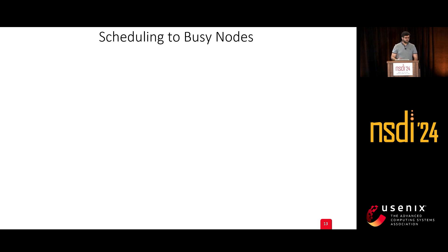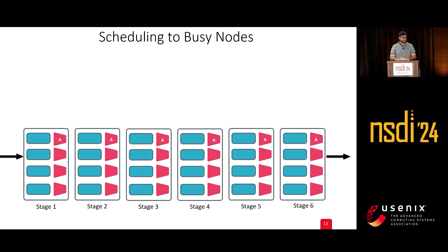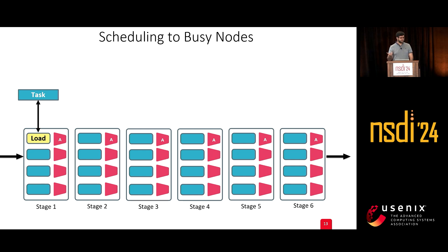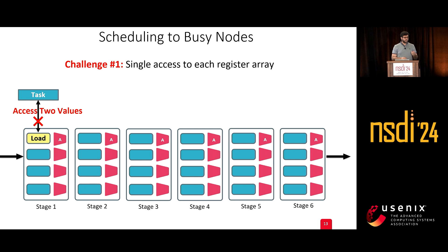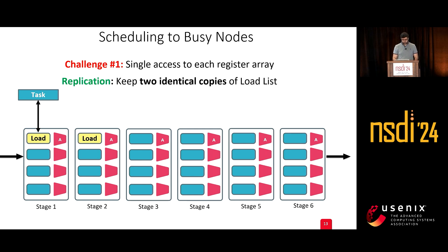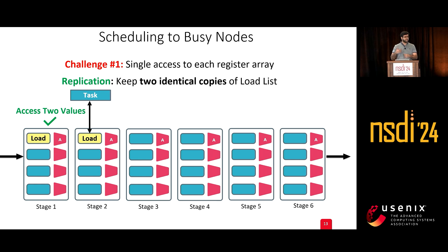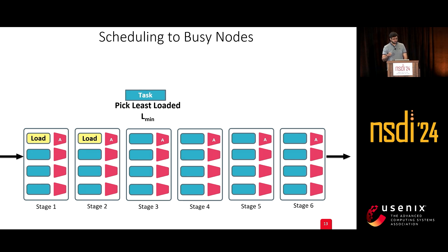In packet processing pipelines, packets concurrently exercise different stages. A task enters the pipeline as a packet and reads the load value from the load memory. The first challenge is that we can only have single access to each register array in any stage. To address this, we replicate the load register array across two stages, so when the task moves to the next stage it can access another load value. In the following stage, we pick the least loaded node from both.